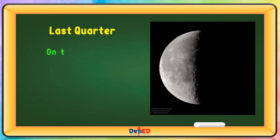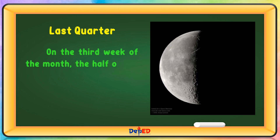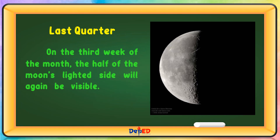Last Quarter Moon — On the third week of the month, the half of the Moon's lighted side will again be visible. This is called last quarter moon.